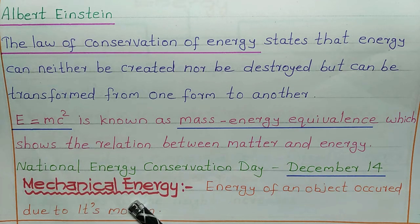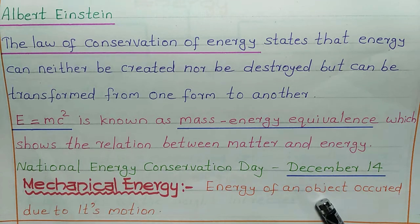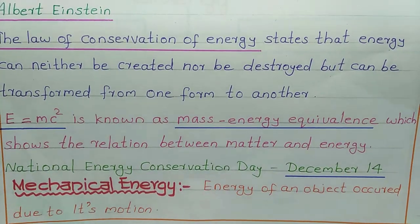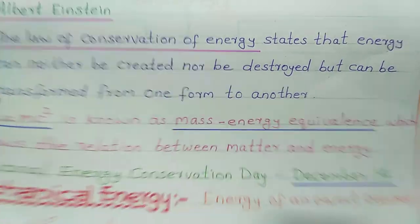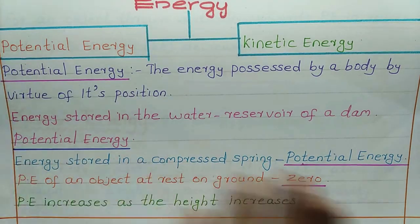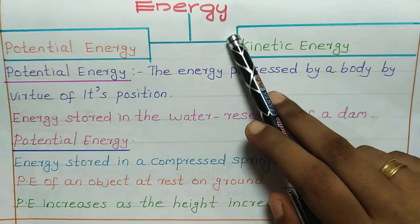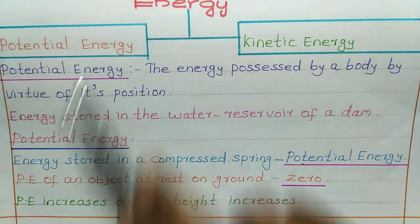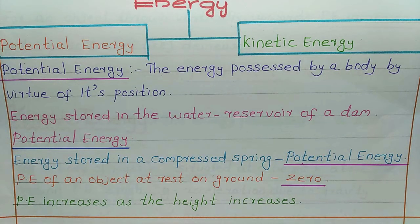Next, let's see about mechanical energy. Mechanical energy is the energy of an object that occurs due to its motion or movement. Mechanical energy is divided into two types: potential energy and kinetic energy.